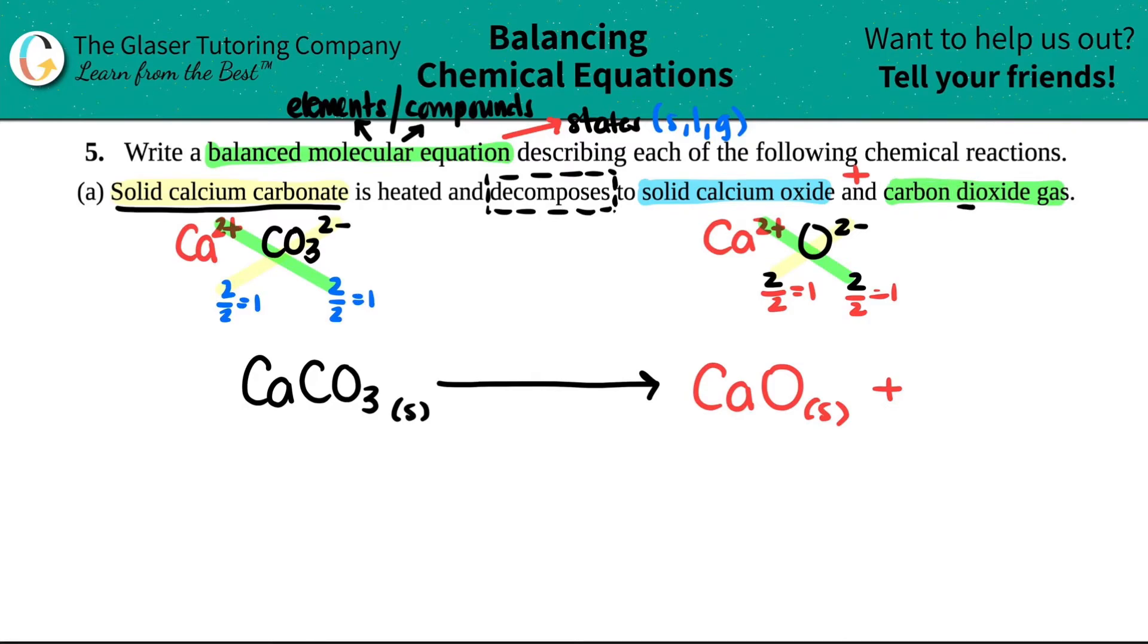You have one carbon. Di tells you that you have two. So you have two oxygens. So CO2. And now you just got to tell me the state. So that's a gas. And voila, that is your molecular equation.